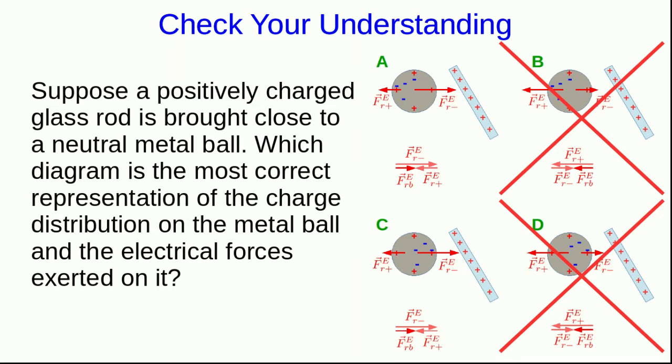Then look at A. A can't be right, because the positive charges in the rod should be attracting the negative charges in the ball, and so the negative charges in the ball should be pulled towards the rod. But A is showing them pushed away to the far side, so that's not right. And so we're left with C,